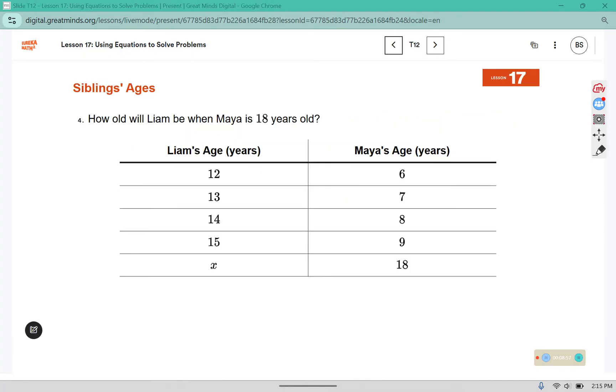How old will Liam be when Maya is 18 years old? Well, let's check and see if there's a proportional relationship here. The y value divided by the x value. 6 divided by 12 is at the same as 7 divided by 13. 6 divided by 12 comes out to 0.5. 7 divided by 13 is 0.538 and so on. So those are not the same. These are not proportional. So we can't use a k or a constant of proportionality to write an equation. We need to come up with a different strategy here. We need to look for a different pattern.